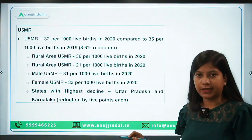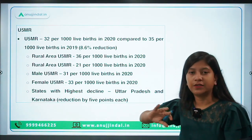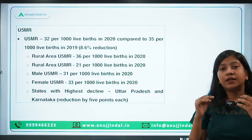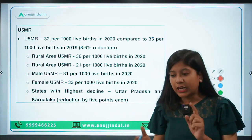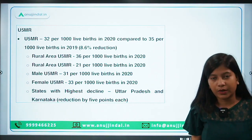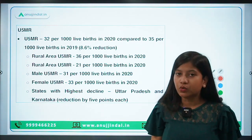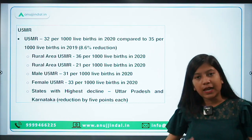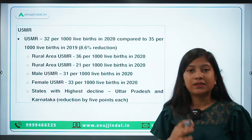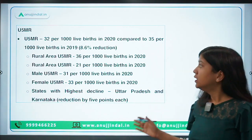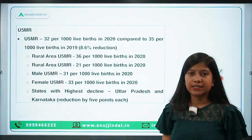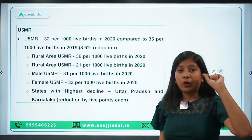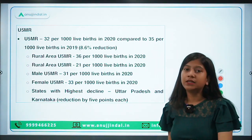The under-five mortality rate covers children dying before attaining the age of five years. As per this report, the numbers have been declining across the parameters — under-five, neonatal, and infant — but it is still high. The government needs to work to reduce this number through schemes like Indra Dhanush and polio immunization. The under-five mortality rate is 32 per thousand live births in 2020, meaning 32 children out of every 1,000 are dying.